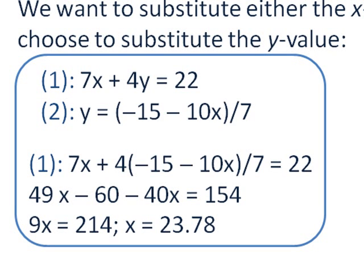Again, I'm going to multiply across by 7 just to get rid of that fraction. So when I multiply 7x by 7, I get 49x. When I multiply that fraction by 7, I just get the numerator of the fraction. So I've got 4 times minus 15 is minus 60, 4 times minus 10x is minus 40x. And when I multiply 22 by 7, I get 154.